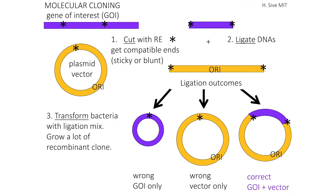A gene of interest is cut, and the plasmid vector with its origin of replication is cut. The two DNAs are ligated — they've got compatible ends. There can actually be three outcomes of this ligation: your gene of interest just circularizing, which is not productive and those DNAs will disappear later; the vector only ligating, which can be a problem with ways to get rid of those; and then the correct construct, which is your gene of interest plus the vector. You take that ligation mix and transform bacteria with it to grow a lot of the recombinant clone.